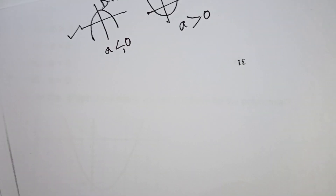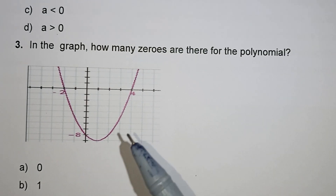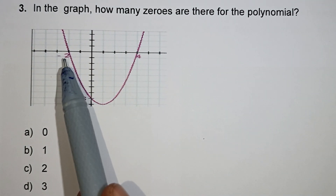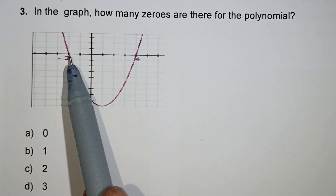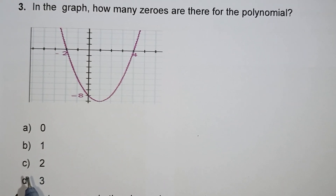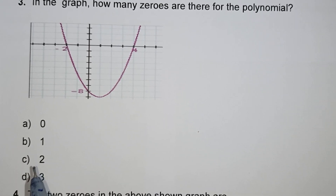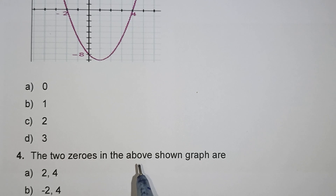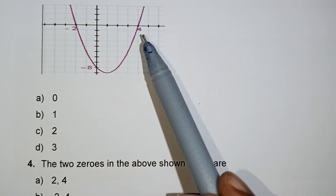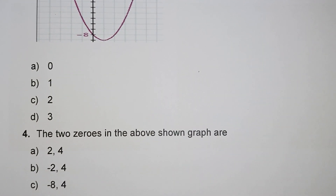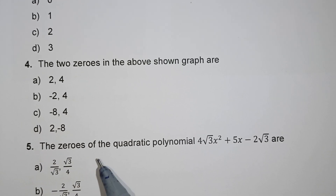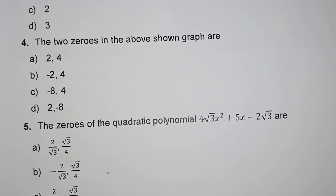From the graph, how many zeros are there for the polynomial? The zeros are where the graph meets the x-axis. It is clearly more than 0 and equal to 0 in certain places. The zeros are minus 2 and plus 4 — so B option, minus 2 and plus 4, is the answer.